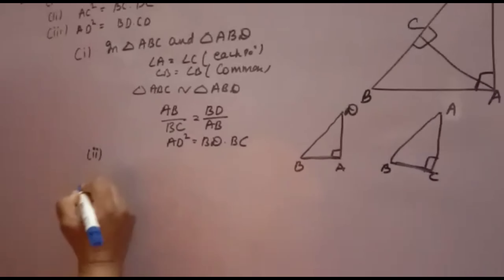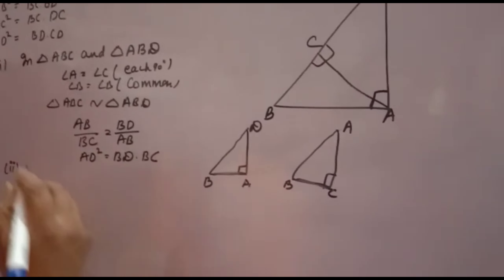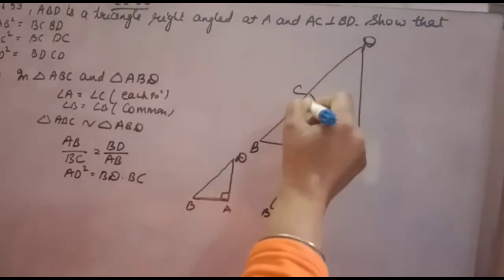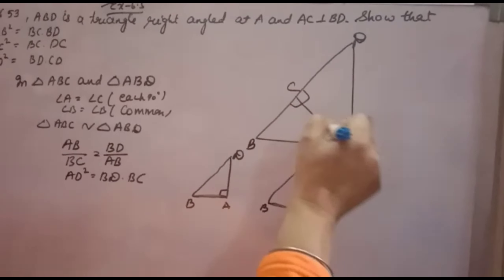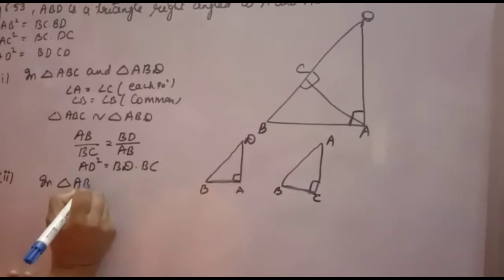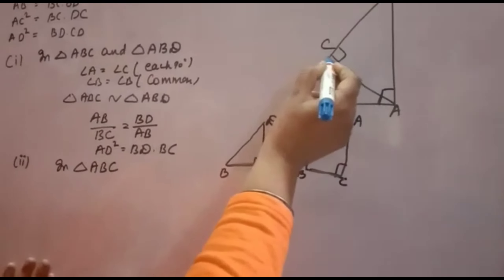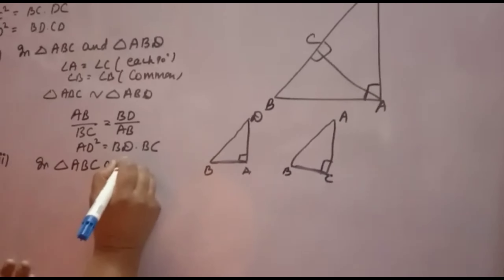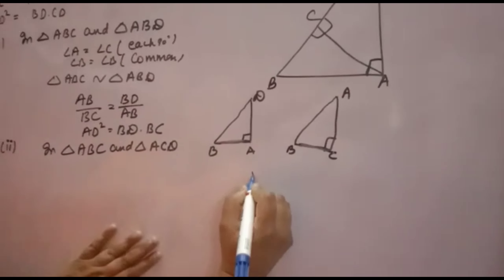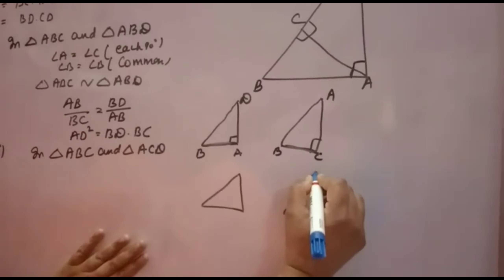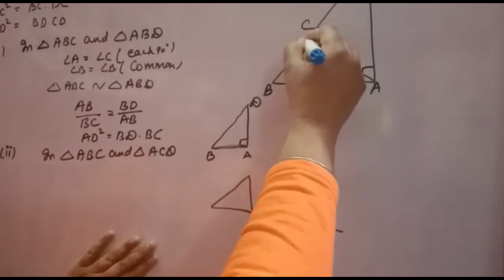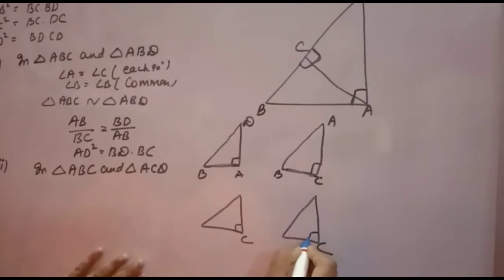Now see the second part — very important. In the second part, you want AC². So you have to take triangle ABC, because AC is coming in this, and AC is also coming in triangle ACD. So you will take triangle ACD. Again you will draw two triangles separately so that it is easier to find which sides will be proportional. C is 90°, so here you will take C.